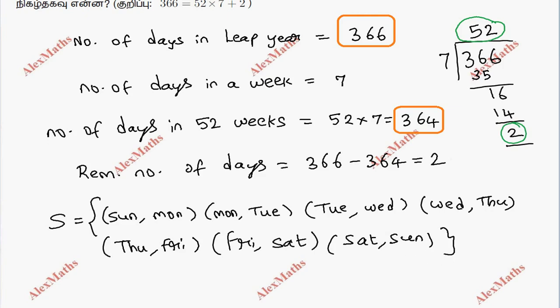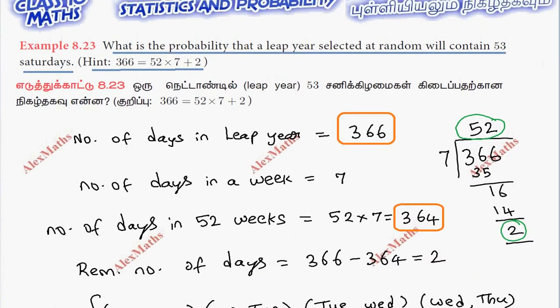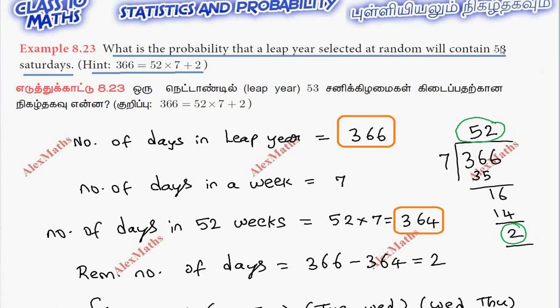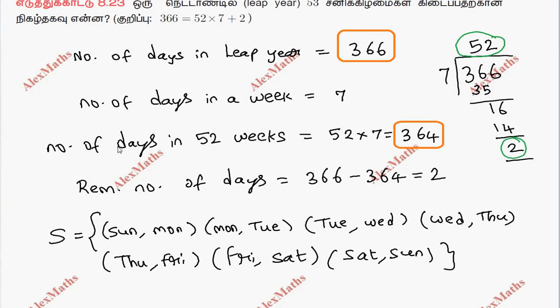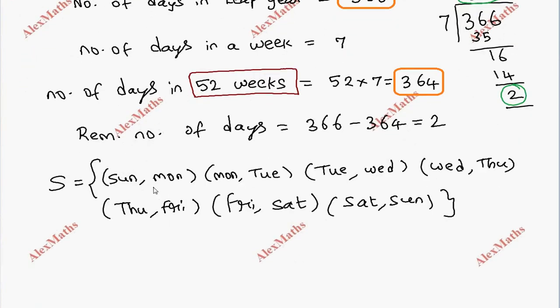What is the probability that 53 Saturdays are there? In the 52 weeks, already 52 Saturdays are coming. For 53 Saturdays, one more Saturday must be in the two remaining days.